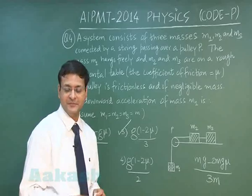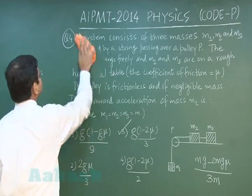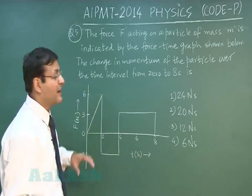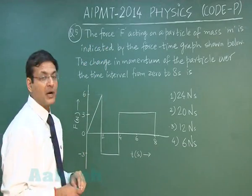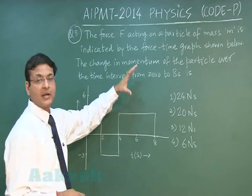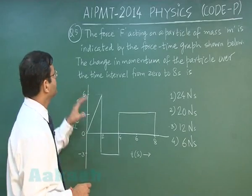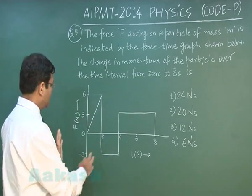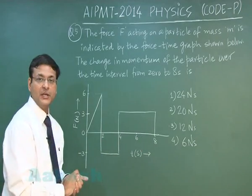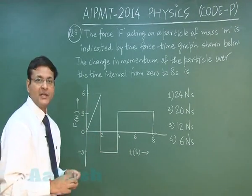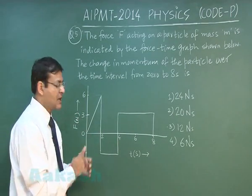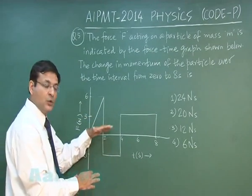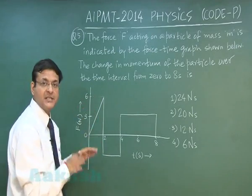Let us discuss question 5. The force F acting on a particle of mass m is indicated by a force-time graph. The change in momentum over the time interval from 0 to 8 seconds is demanded. Force is on the vertical axis and time on the horizontal axis. Remember that change in momentum equals the area under the force-time graph, and since force is a vector, area below the axis is negative and area above is positive.